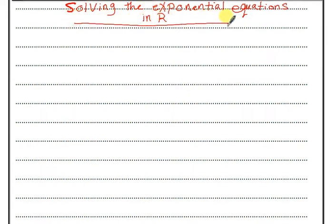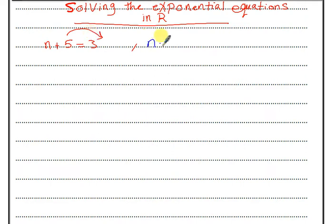At first, we should remember how to solve simple equations. If we have n plus 5 equals 3, I will take the inverse of 5, and n will be 3 minus 5, equal negative 2.